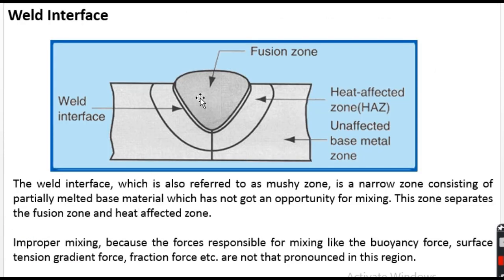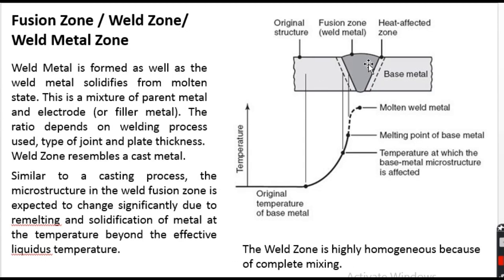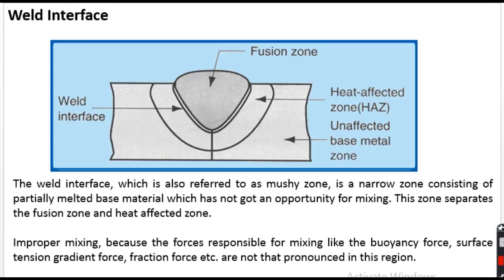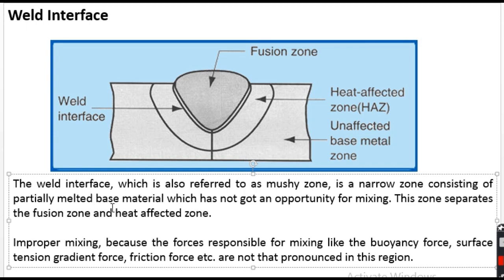Next we have the weld interface — a narrow region just adjacent to the fusion zone, in between the heat affected zone and the fusion zone. The weld interface is also referred to as the mushy zone. It also undergoes melting, but it is not homogeneous because the mixing is not proper. In the fusion zone, complete melting took place and mixing was proper, but in the weld interface, melting occurs but mixing is improper. The forces responsible for mixing — buoyancy force, surface tension gradient force, and friction force — are not effective in this region, making it a very narrow zone.